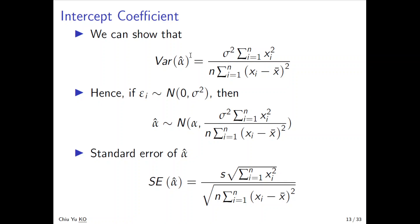By understanding the variability of alpha, we can do hypothesis testing on alpha and beta. We will show this variance expression shortly. First, suppose it's true and further assume epsilon follows a normal distribution with mean zero and constant variance. Then alpha-hat will also follow a normal distribution with mean alpha — because by the Gauss-Markov theorem, alpha-hat is an unbiased estimator of alpha. The square root of the variance part will be the standard error.